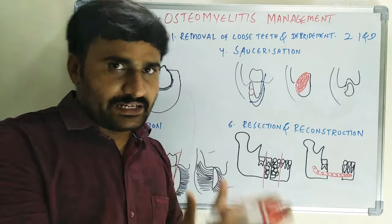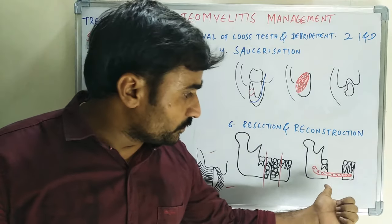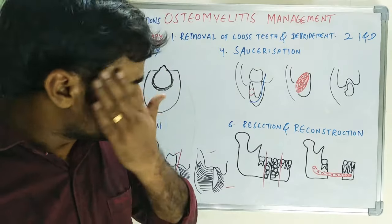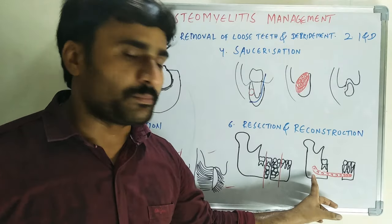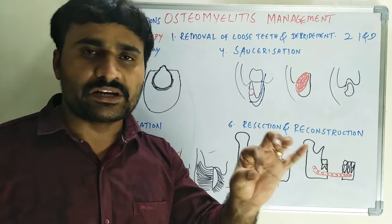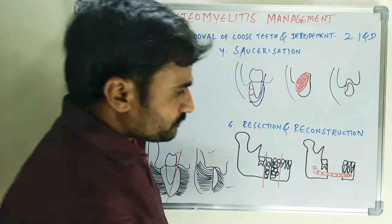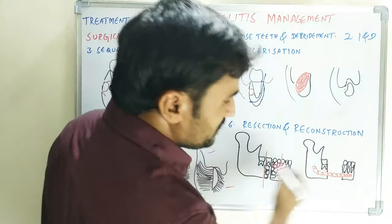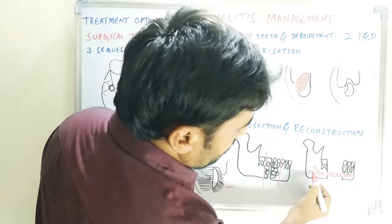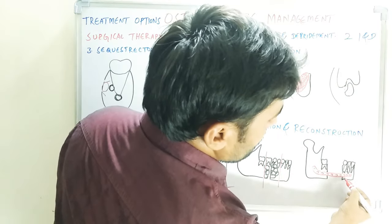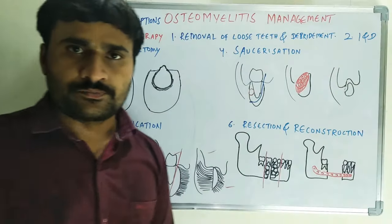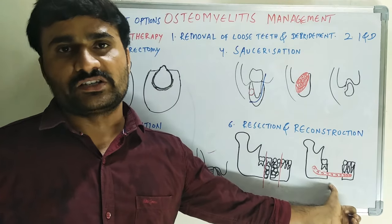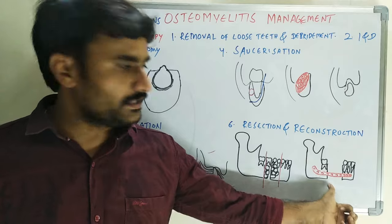Reconstruction can be immediate or delayed. During immediate reconstruction, a 2.5 mm reconstruction plate is used with three screws fixed on each side — this is load-bearing type of fixation.